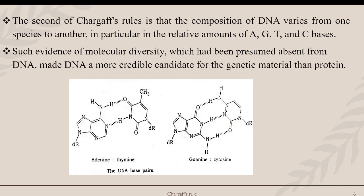The second of Chargaff's rules is that the composition of DNA varies from one species to another, in particular in the relative amount of A, G, T, and C bases. Such evidence of molecular diversity, which had been presumed absent from DNA, made DNA a more credible candidate for the genetic material than protein.